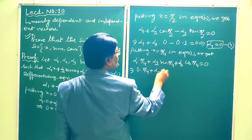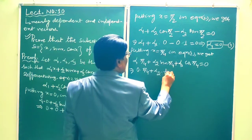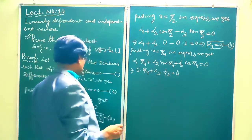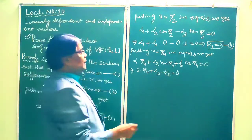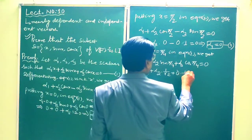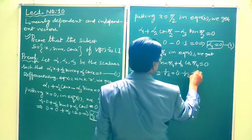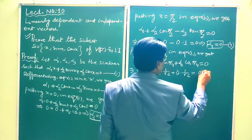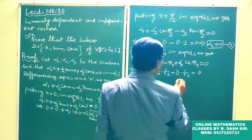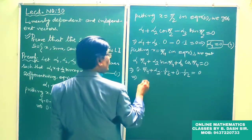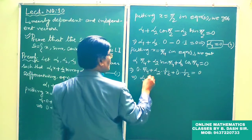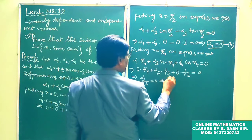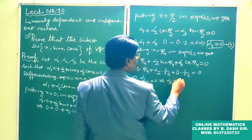Substituting α2·sin(π/4) = α2·(1/√2) and α3 = 0, this implies α2/√2 = 0, which implies α2 = 0. This is equation 5.